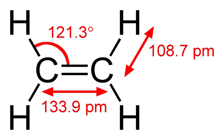Ethylene has long represented the major non-fermentative precursor to ethanol. The original method entailed its conversion to diethyl sulfate, followed by hydrolysis. The main method practiced since the mid-1990s is the direct hydration of ethylene catalyzed by solid acid catalysts.